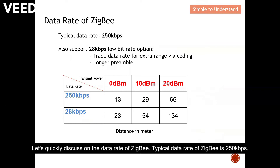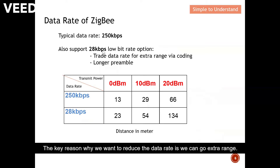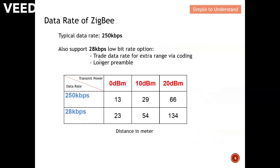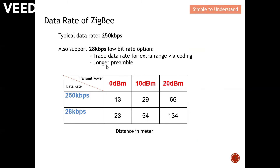The typical data rate of ZigBee is 250 kilobits per second. However, there is a low-bit-rate option where we can reduce the data rate from 250 to 28 kilobits per second. The key reason to reduce the data rate is to achieve extra range, which can be done through coding. When we reduce the data rate, we have a longer preamble.